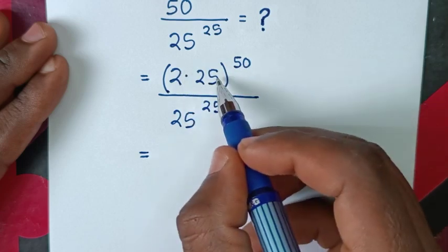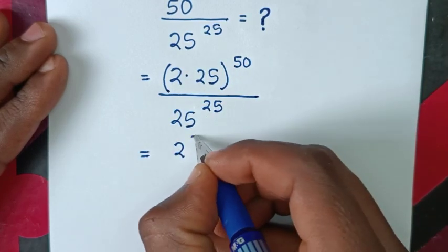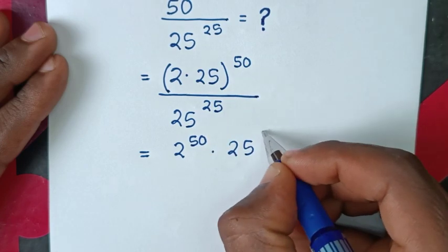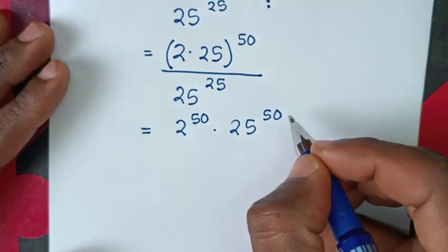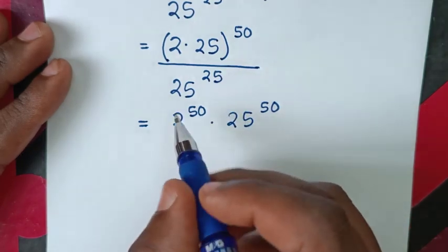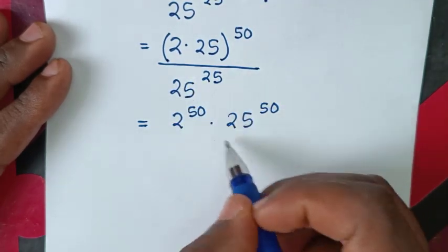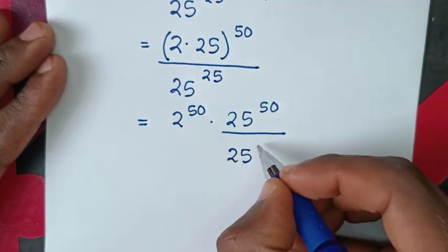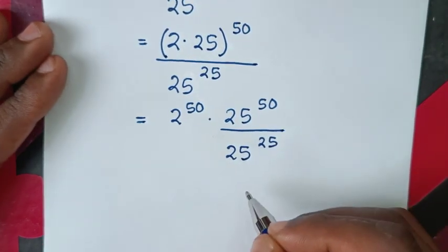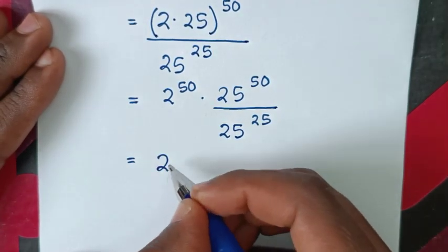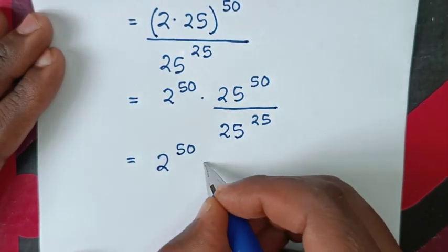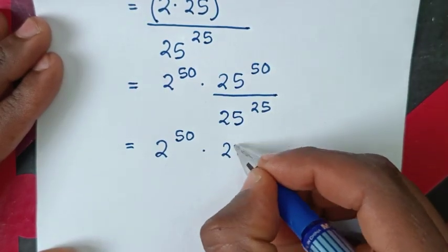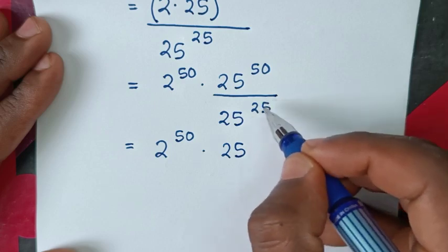Distributing the power of 50 inside the bracket gives us 2^50 times 25^50, over 25^25. We then divide the powers of 25: since we have 25^50 over 25^25, applying the same-base division rule gives 25^(50−25) which is 25^25.